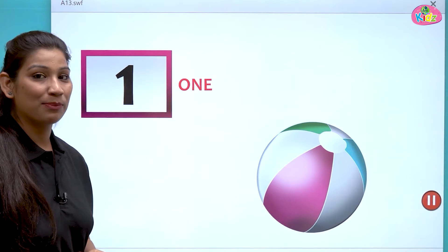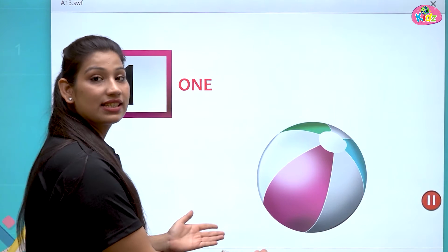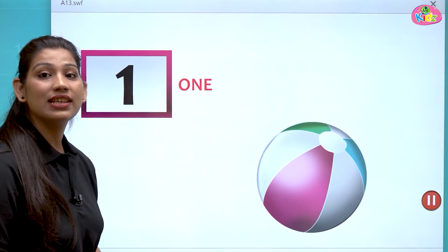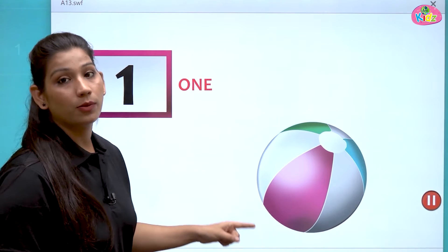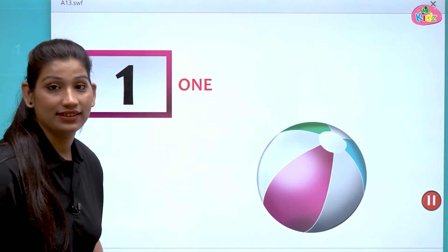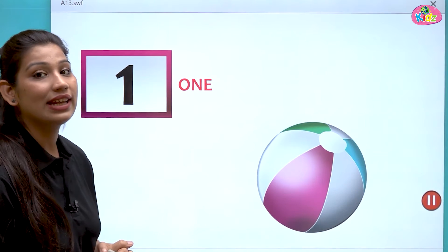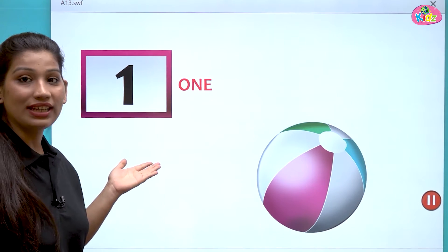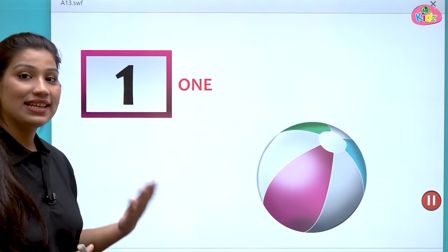The first number is number one. Here you can see a ball — there is one ball. This is number one. The spelling is O-N-E, one. O-N-E is the spelling of number one. This is one ball.